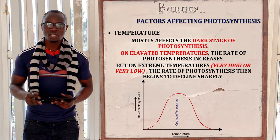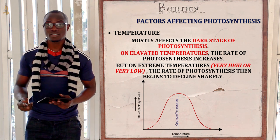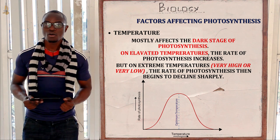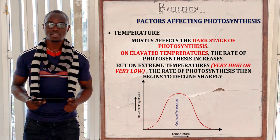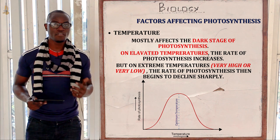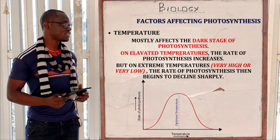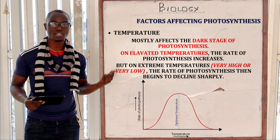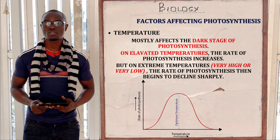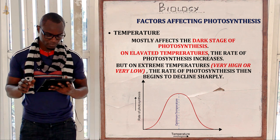This is because the dark stage of photosynthesis is enzyme-controlled. Since it is enzyme-controlled, enzymes are denatured at very high temperatures, and that is why the rate of photosynthesis rises up to a certain point and then stops at increased temperatures.